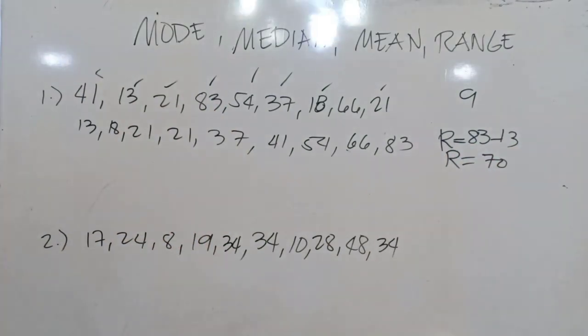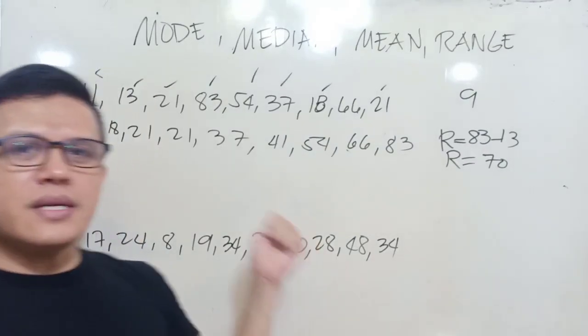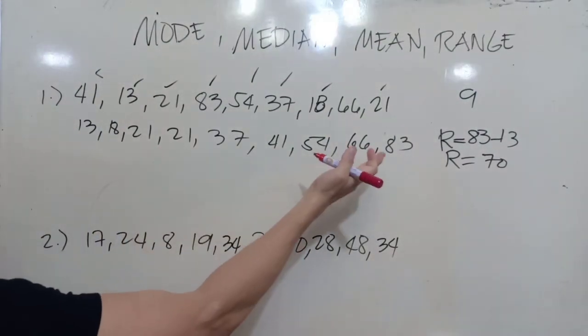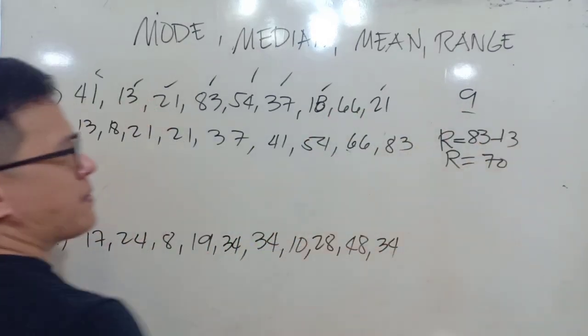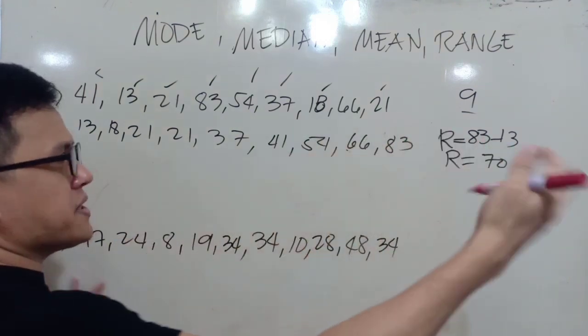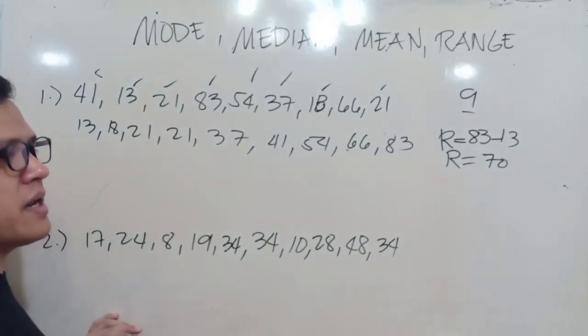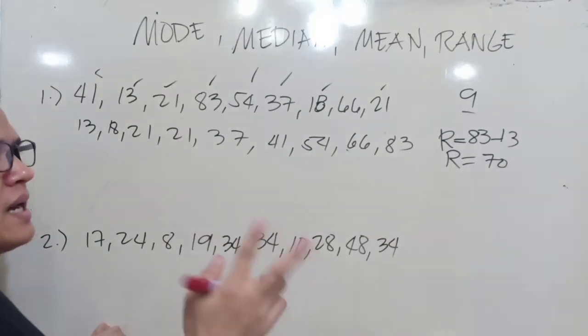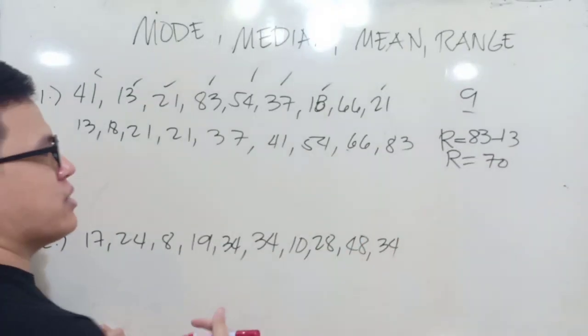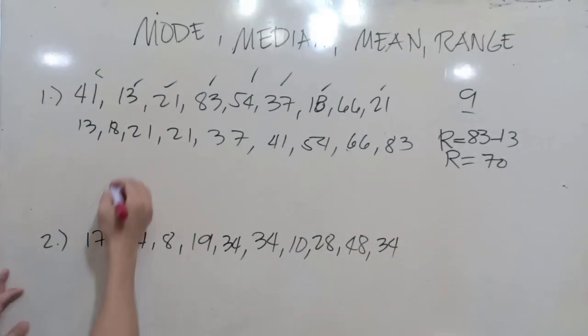Now, how about the mode, the median? Let's try to get first the median. Try to take note on this: if the number of data in a set is an odd number, the middlemost, that is our median. But if it's even like 2, 4, 6, 8, 10, the number of data in a given set, the two middlemost will be added and then divided by 2.